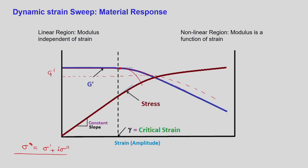In the linear region, no matter how much you increase the strain amplitude, G prime remains constant. In the non-linear region, it becomes a function of strain. The critical strain — gamma_L — is recorded so that in subsequent experiments (frequency analysis or other oscillations), you do not go beyond this strain. That is why you need to identify the linear viscoelastic regime.